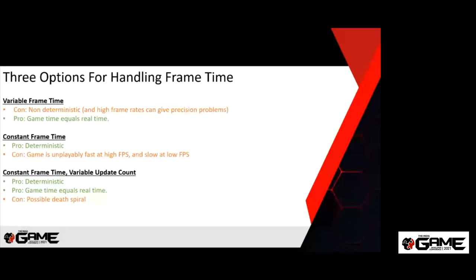There is a downside to the variable update count approach: a death spiral. If your physics update takes two milliseconds but you budgeted one, the next frame requires two updates, then four, then eight — it just keeps growing. The fix is to put a limit on the number of updates per frame to keep it from spiraling out of control. When you hit this problem, gameplay will slow down, but something has to give — it's a pretty nice compromise.